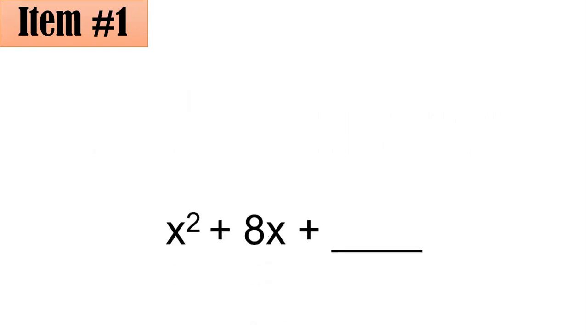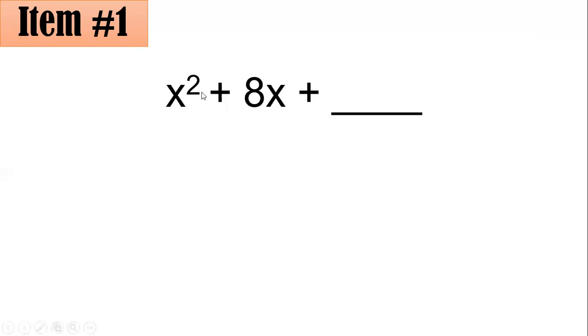For this question, what constant will make this a PST or a perfect square trinomial? Since the numerical coefficient of x squared is 1, we can now simply divide. The technique is we have to divide the coefficient of this x by 2. So 8 divided by 2 is 4. And after dividing it by 2, then you square the result.